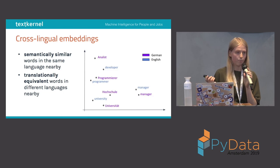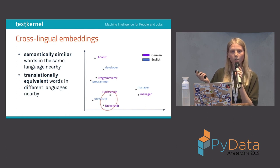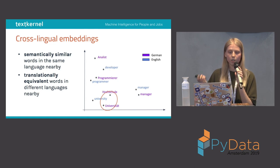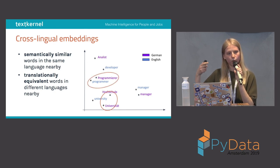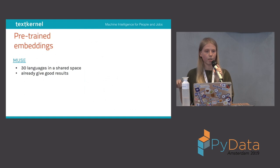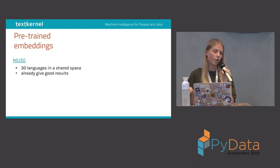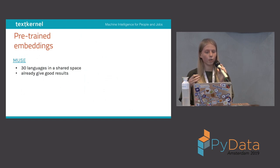So what are cross-lingual embeddings? Cross-lingual embeddings are word representations that capture two main things: first, semantically similar words in the same language should be nearby — for example, Hochschule and Universität in German. Second, translational equivalents in different languages should be close by — for example, Programmierer in German and Programmer in English should be mapped close to each other. You can just download cross-lingual embeddings; I'd highly recommend the MUSE GitHub repository, a Facebook project with 30 languages all mapped into a shared space, giving quite good results.